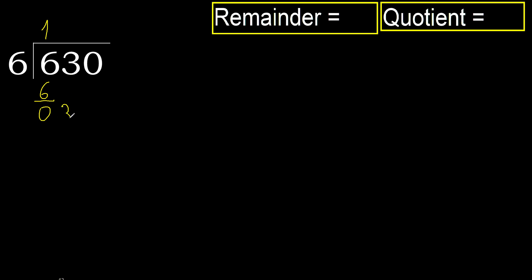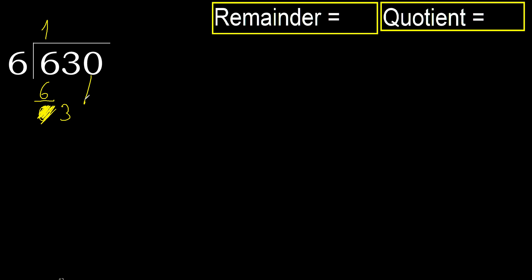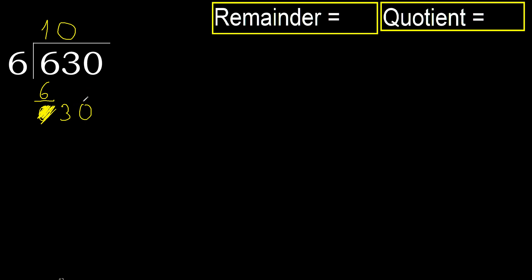Next, eliminate the 0 on this side. Next, 3 is less than 6, therefore move to the next step. We have 2 numbers, so complete — always complete with 0. Because we have 2 numbers, we get 30.